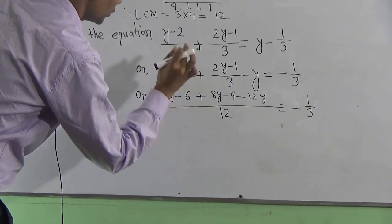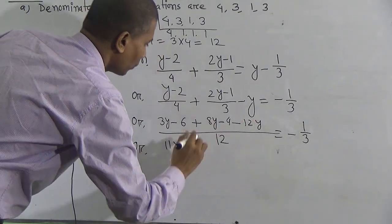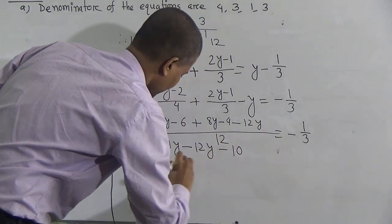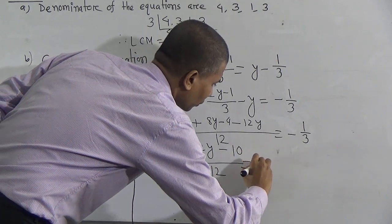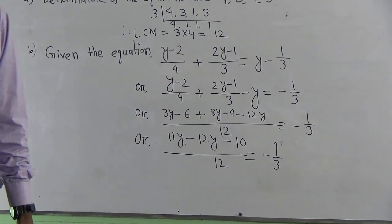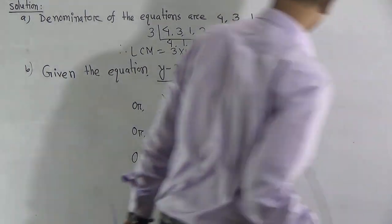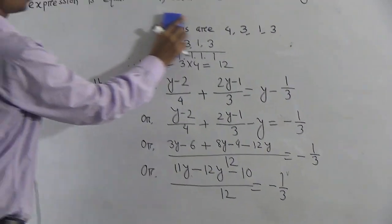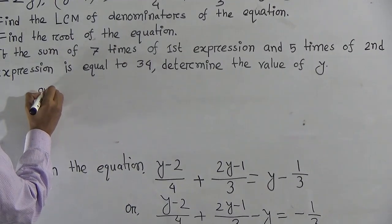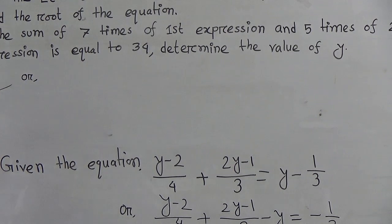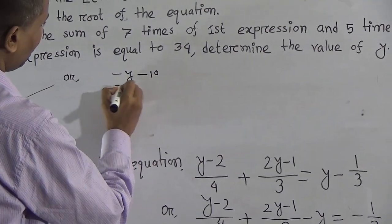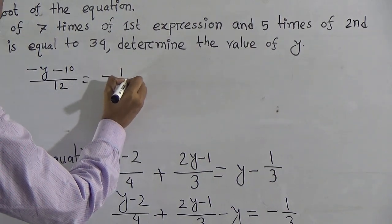Now, 3y plus 8y equals 11y, and on the right side we have 12y. Minus 6 and minus 4 equal minus 10, with denominator 12. So we have 11y minus 12y on the left, which equals minus y. Therefore, minus y equals minus 10 by 12, which equals minus 1 by 3.